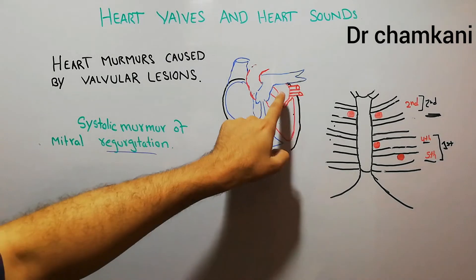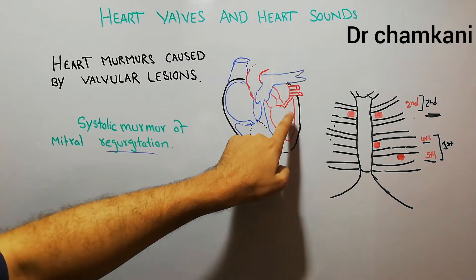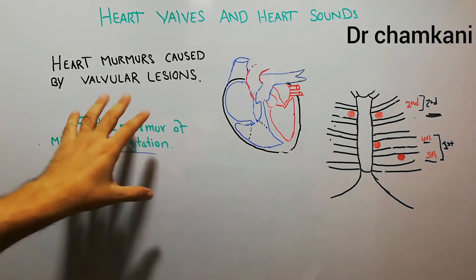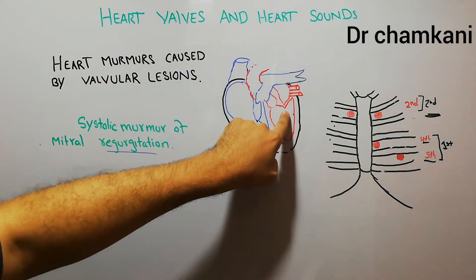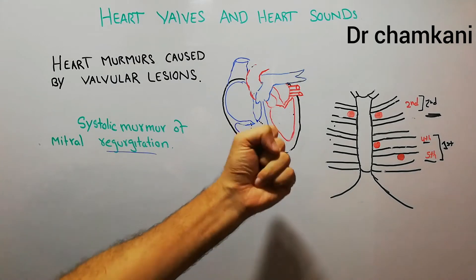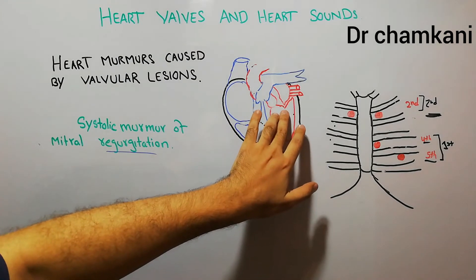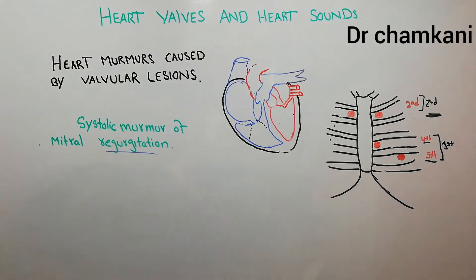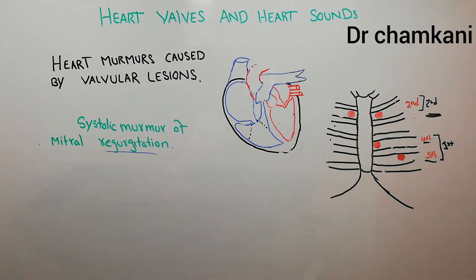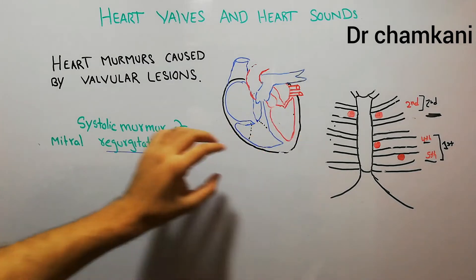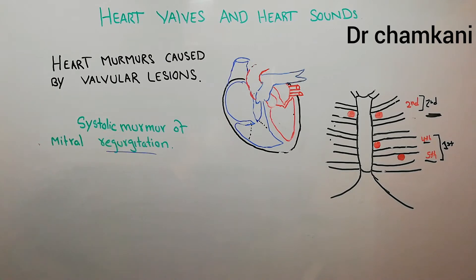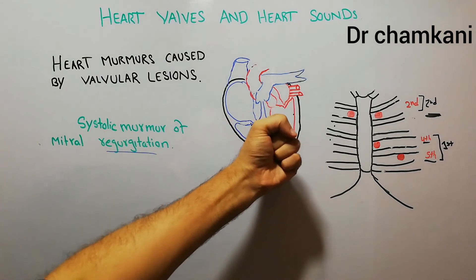Normally when the blood moves from left atrium into the left ventricle during diastole, there is no added sound or murmur. But when the valve is incompetent, we hear an extra sound during contraction of the left ventricle, because normally there is no movement of blood from the left ventricle into the left atrium. When mitral regurgitation occurs due to incompetence of the mitral valve, the blood moves from left ventricle into left atrium, causing a murmur best heard in systole when the left ventricle is contracting.